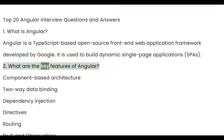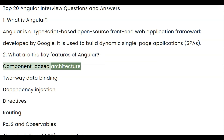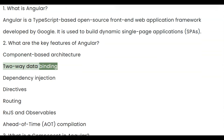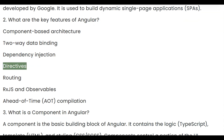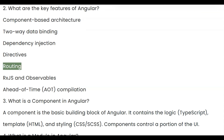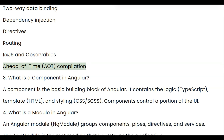Question 2: What are the key features of Angular? Component-based architecture, two-way data binding, dependency injection, directives, routing, RxJS and Observables, and ahead-of-time compilation.